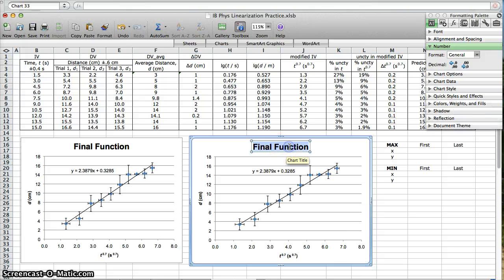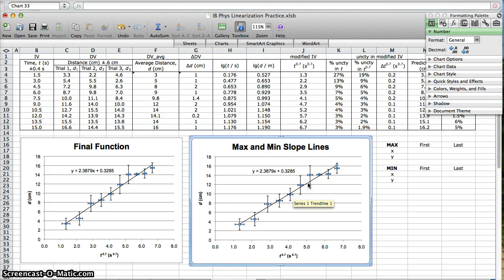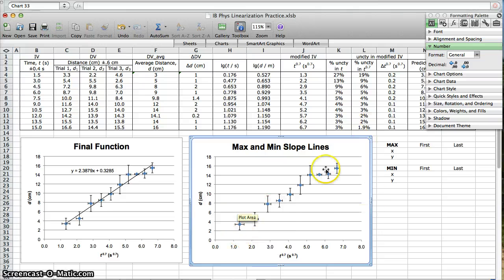You want to change this title. This will be max and min slope lines, or if you have a better title, go for it. Get rid of the existing trend line, because we're going to have two more that we put in, so you don't want too many lines on this graph.